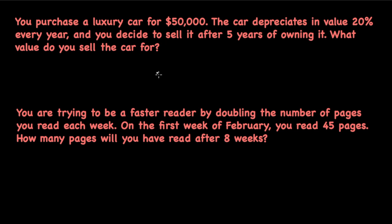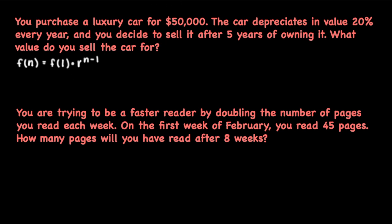The first step in any geometric sequence word problem is to write down the explicit rule, which is the easier of the two rules to use when solving word problems. Our explicit formula is f(n) = f(1) times r to the n minus 1. We need to find our initial value and our common ratio r to be able to use this formula.